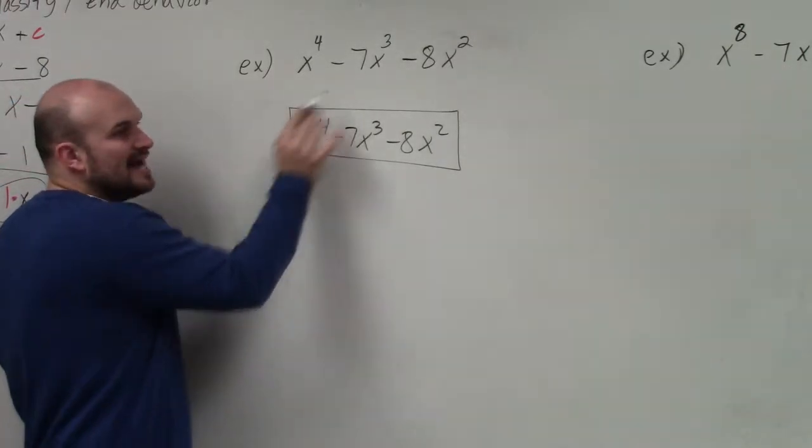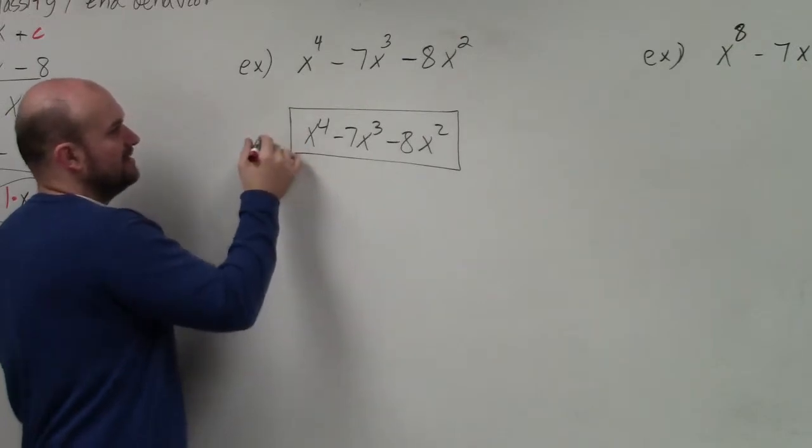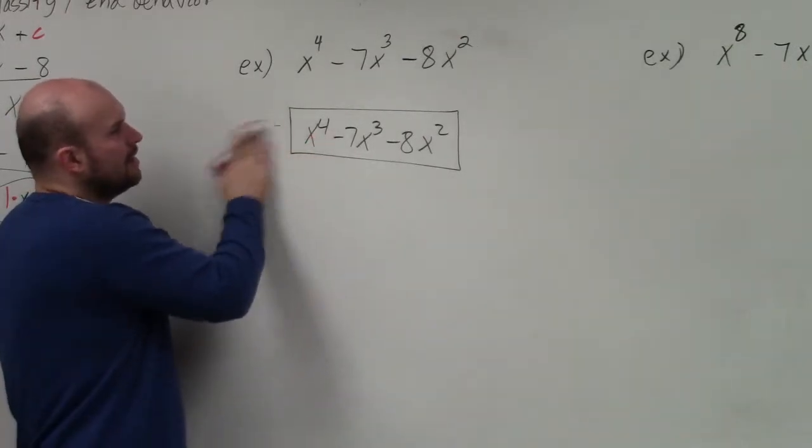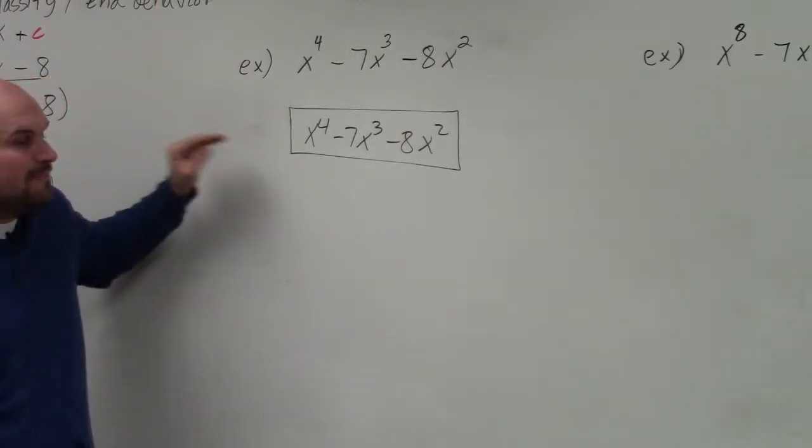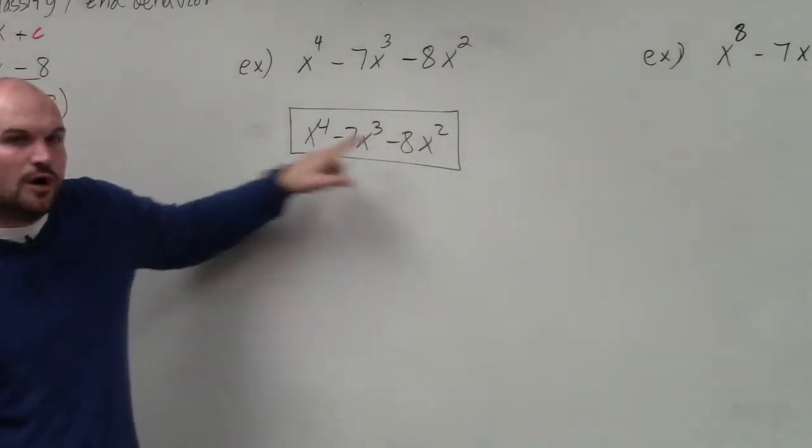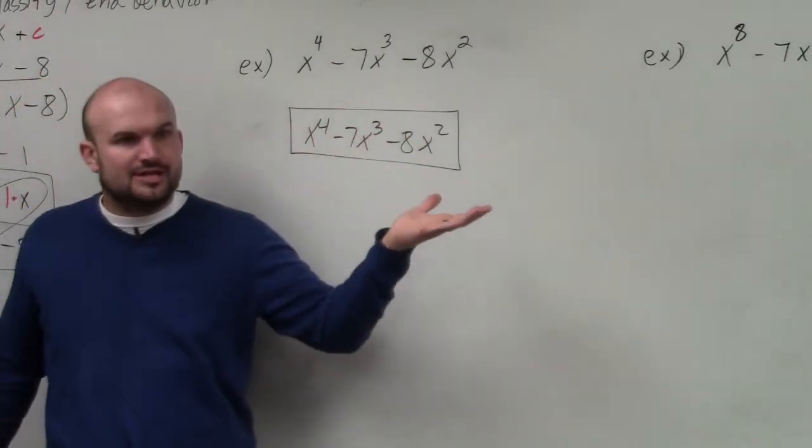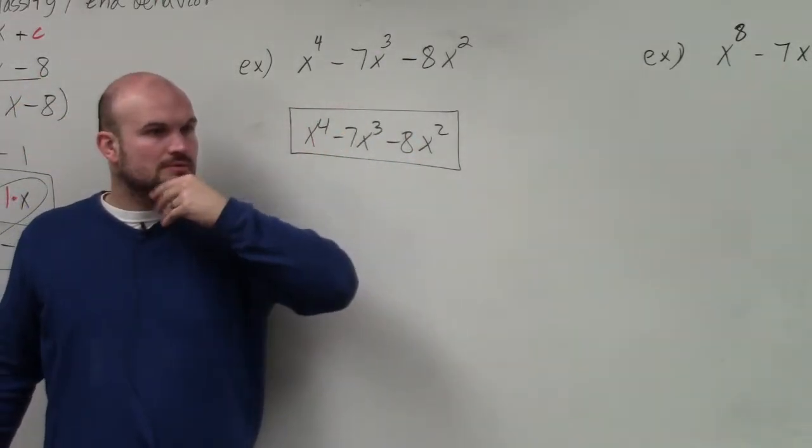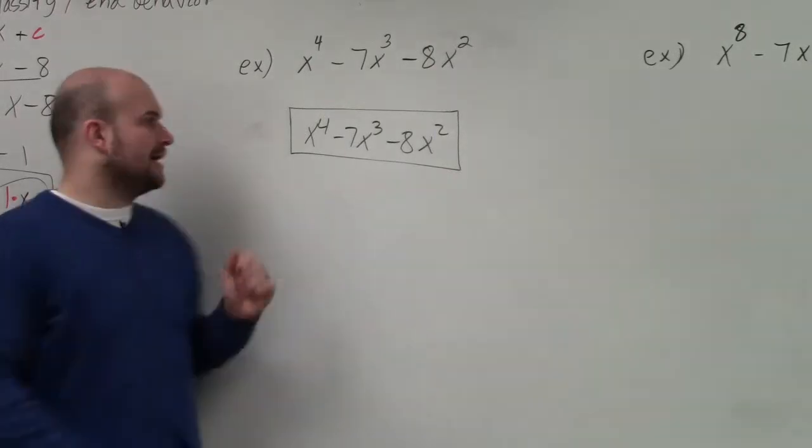So if I want to pick a side length for this box, should I pick the number 5? No. Five times something gives you x to the fourth? No. I want to pick out the largest term that can be evenly divided into all these terms. So does anybody here want to give me a shot? Mary: I was just going to say x. Teacher: x, OK, x works.